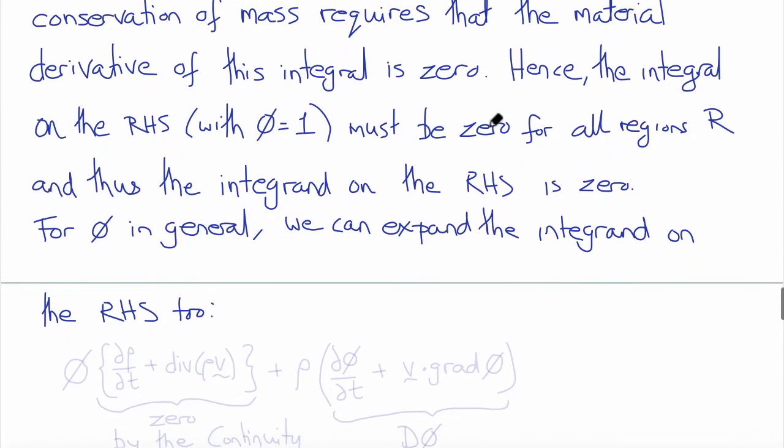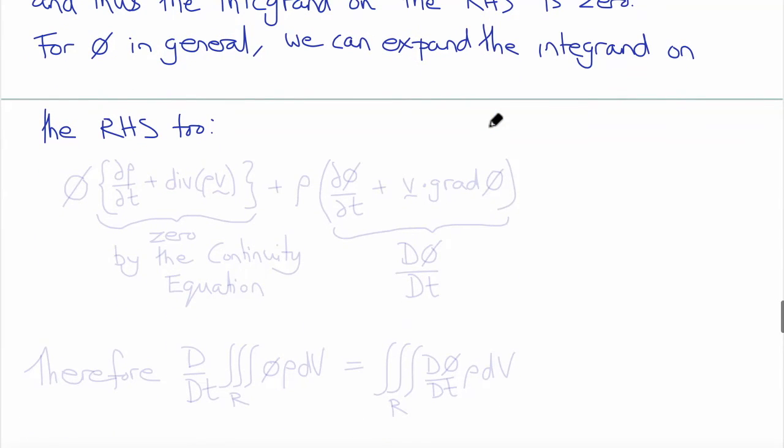For phi in general we can expand the integrand on the right-hand side. We'll get phi times del rho del t plus the divergence of rho V, plus rho times del phi del t plus V dot grad phi.